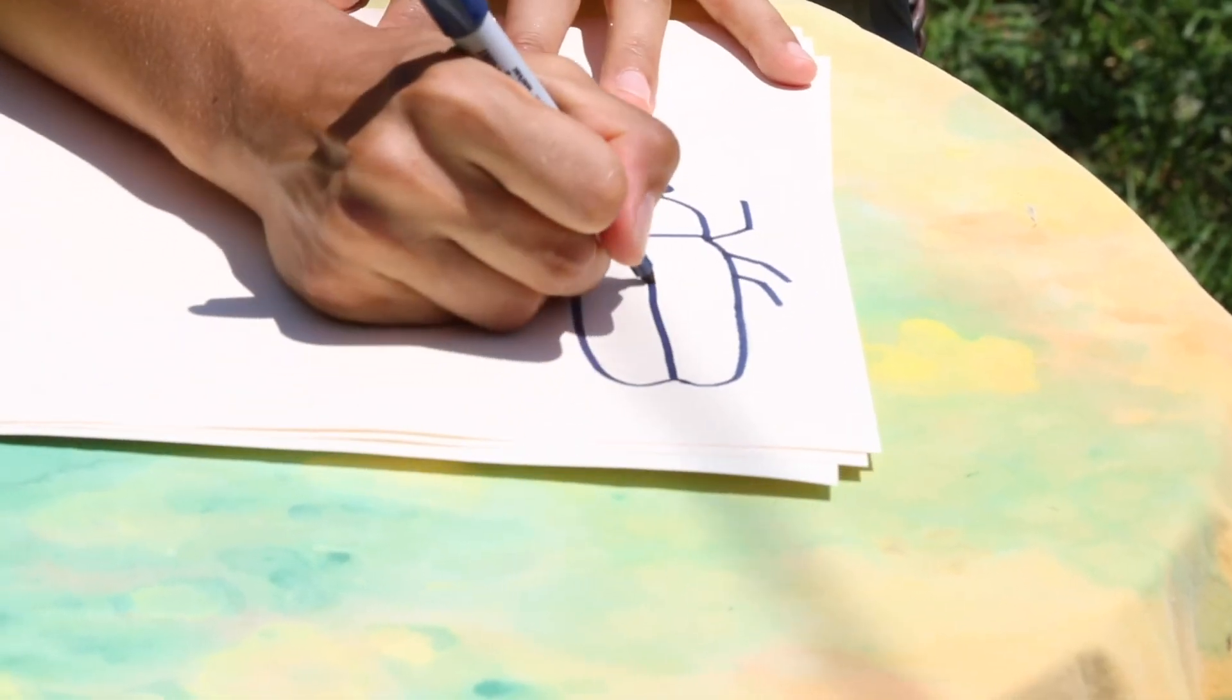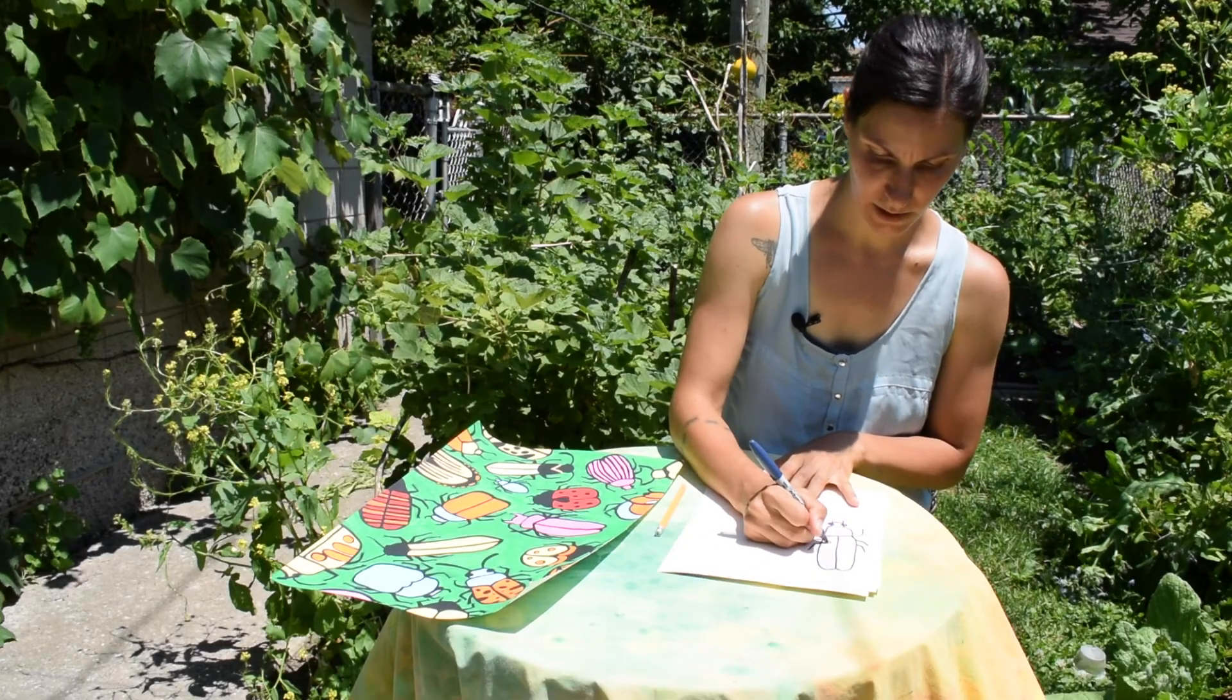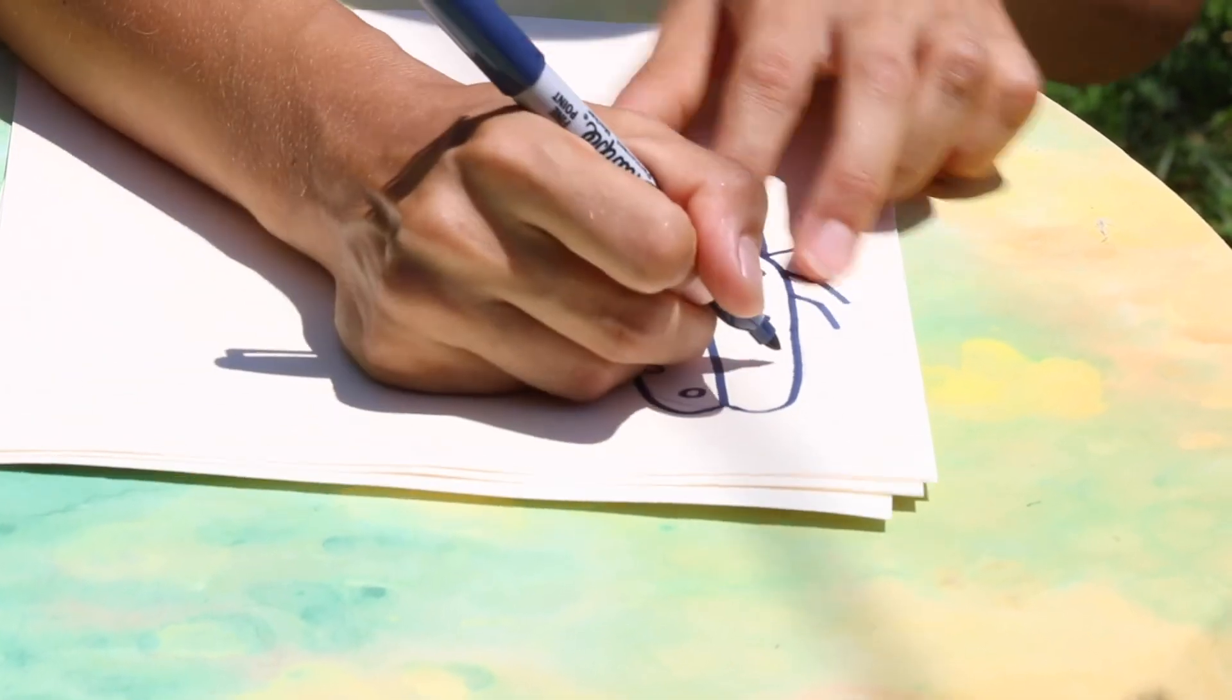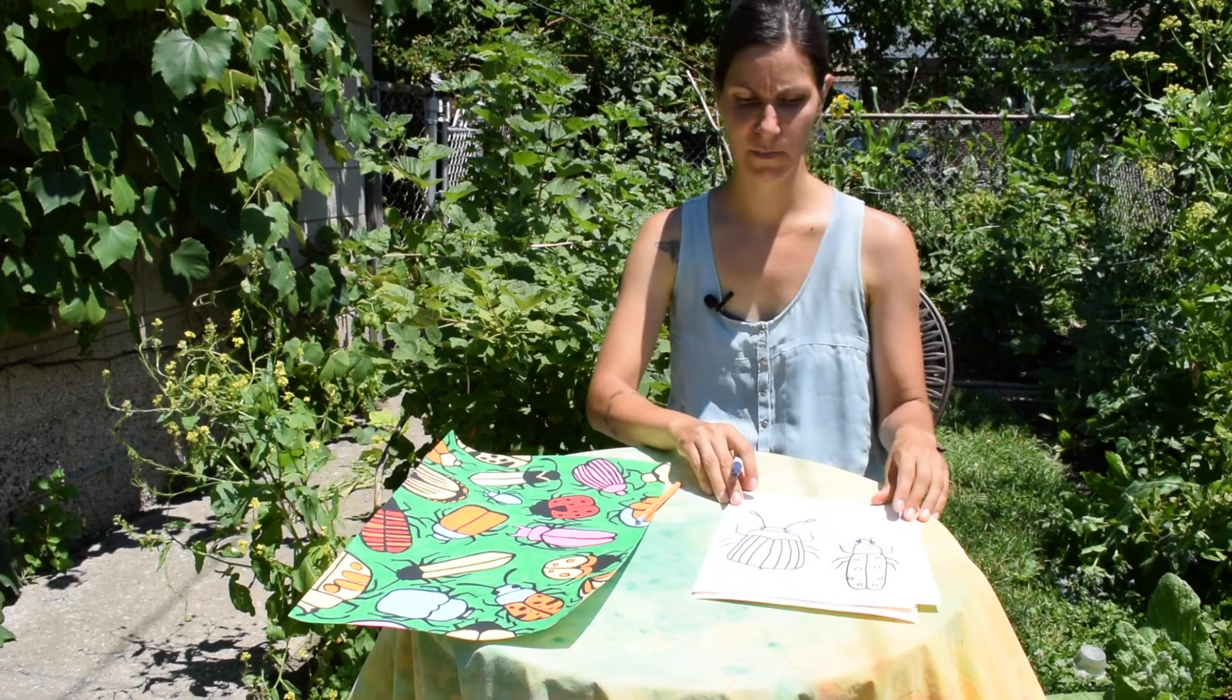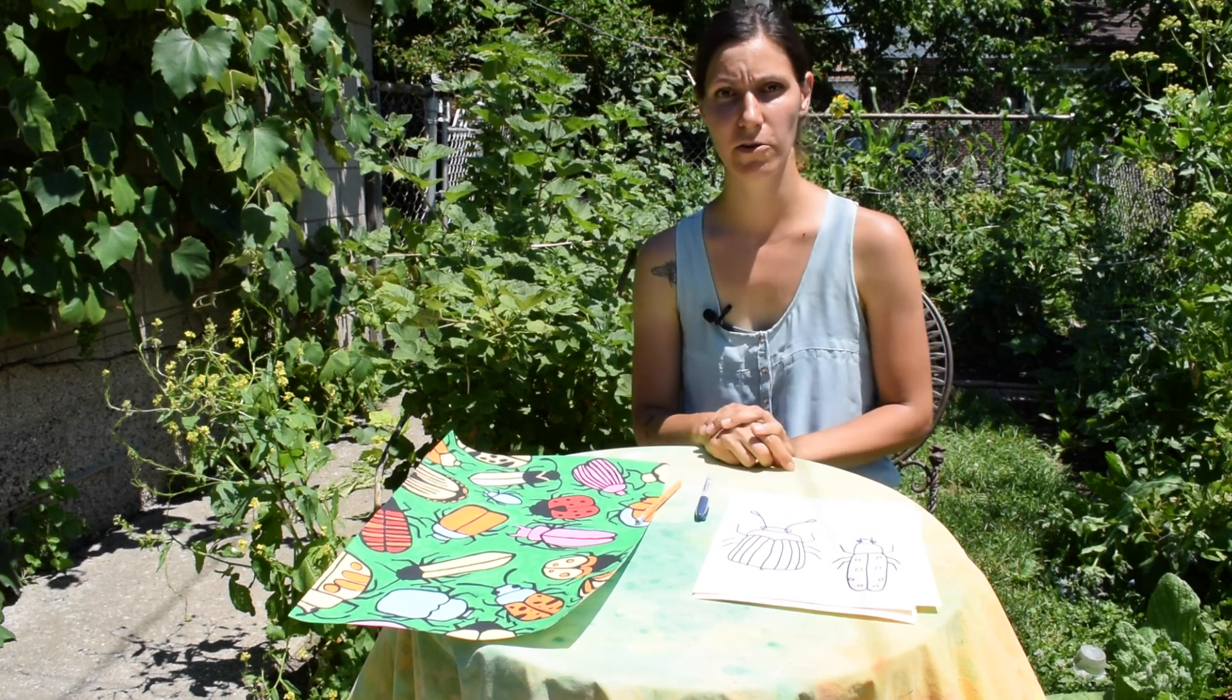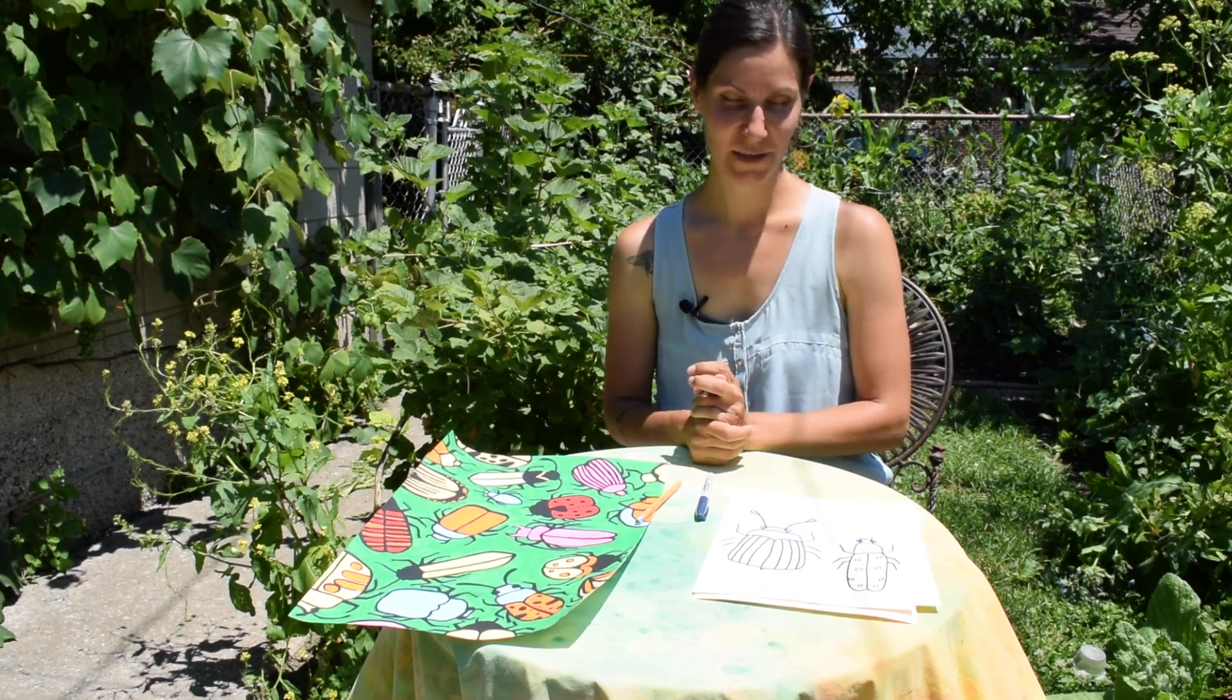And there we have a basic shape. We can add details like splitting where the wings are, we can add spots if we want. Really play with it and do anything you want. You can see with this idea there's endless possibilities in different beetles you can make, and I recommend you go outside and start getting inspiration from the beetles around your home. All right, thank you.